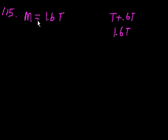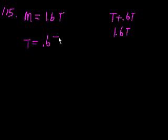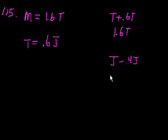And Tim's income is 40% less than Juan's income. If it's 40% less than Juan's income, that means it's 60% of Juan's income. You could view that as Juan's income minus 40% of Juan's income, which is 0.6 times Juan's income. What percentage of Juan's income is Mary's income?